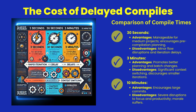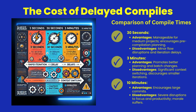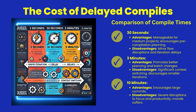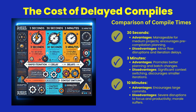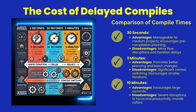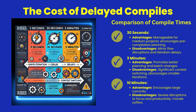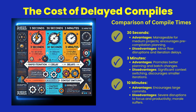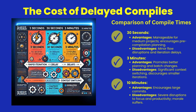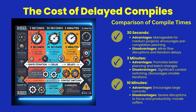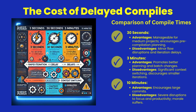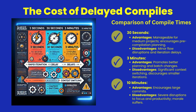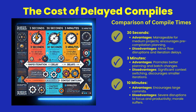Let's compare compile times and their impact on productivity. At 30 seconds, the delay is manageable for medium-sized projects, even encouraging pre-compilation planning. However, it introduces minor disruptions to the developer's flow. At 3 minutes, while it promotes better planning and batching of changes, it also causes noticeable context-switching, discouraging small iterative improvements.